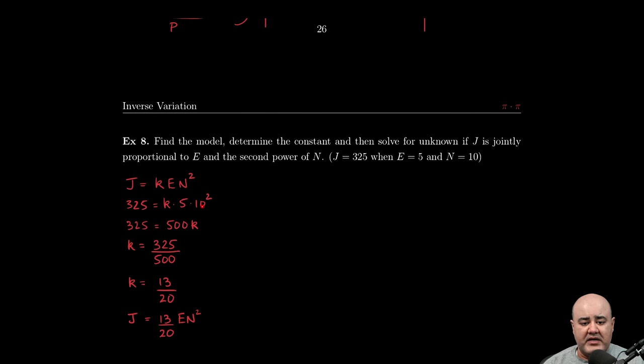10 squared is 100, 100 times 5 is 500, and then in order to solve for k we need to divide the 500 over to the other side. And once we do that, we get k equals 325 over 500, and we can reduce this by 25.